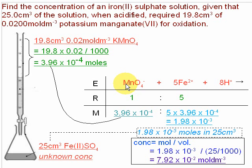I'm going to go through a worked example of a titration question here. This particular one involves an oxidation using potassium permanganate, an oxidizing agent reacting with Fe2+.